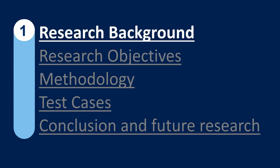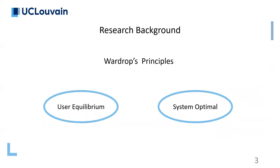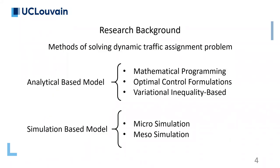Let's start with the research background. As you know, Wardrop principles are among the most important principles in the traffic assignment problem. These principles include the user equilibrium, in which each user tries to minimize its own travel time, while in the second principle, the system optimal, the whole system travel time should be minimized. In the literature, several methods are proposed to solve the traffic assignment problem based on those principles. We can broadly classify these methods into two categories: the analytical-based models and the simulation-based models.